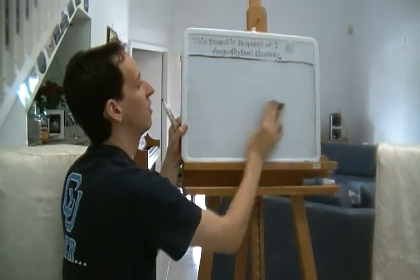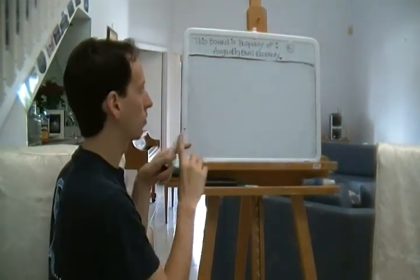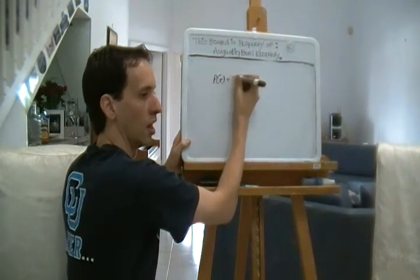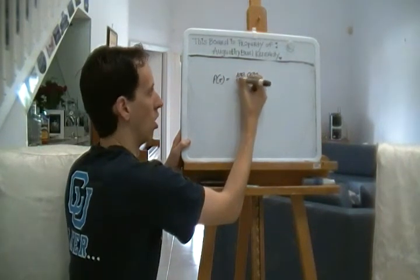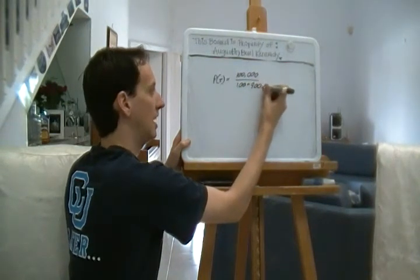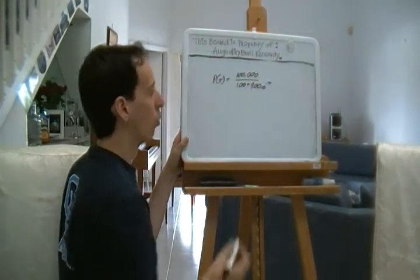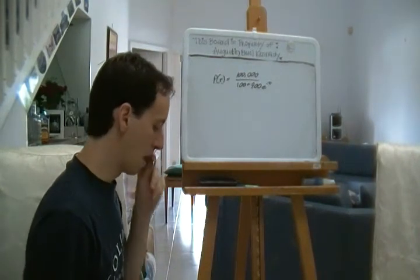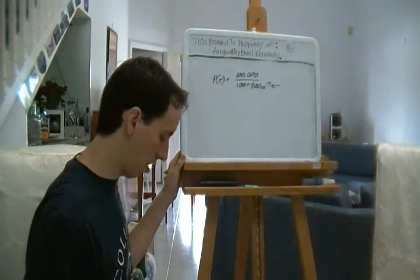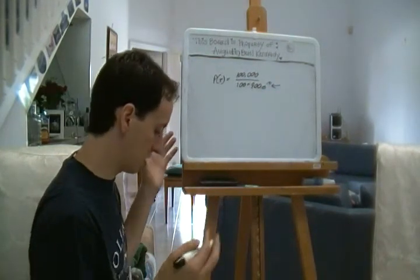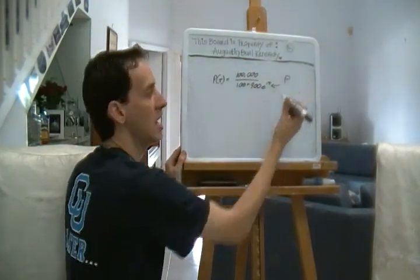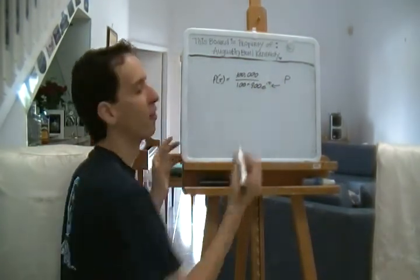The second one is to find the inverse function. Well, if we are looking at p of t equals 100,000 over 100 plus 900 e to the negative t, we're going to look for p. Okay? Now, now we have e to the negative t, alright, now that's there, but what we want is we're going to want to be dealing with the new variable p.